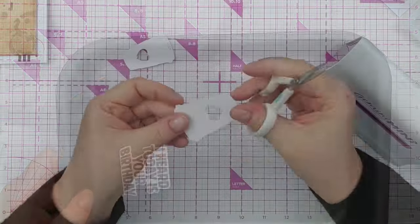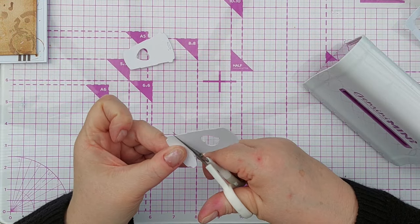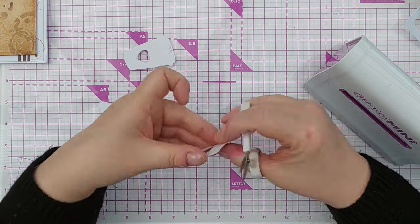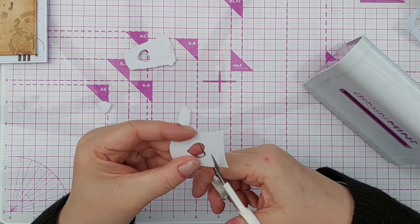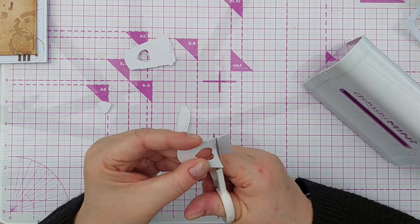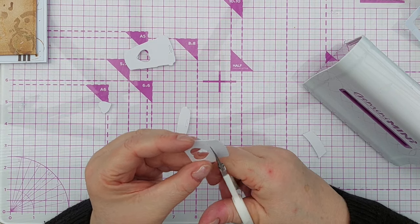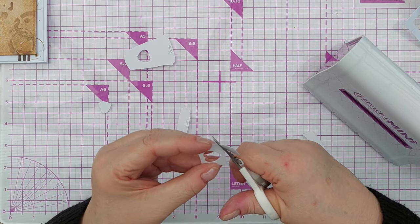To embellish my card I wanted to carry on this coffee theme, so I die cut two takeaway coffee cups from mixed media paper. One of them I left as is, the other one I trimmed off the sleeve and trimmed off the lid because I'm going to put these on top of the other die cut to give it a bit of dimension.